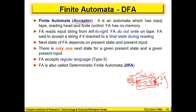It comprises an input tape where we are going to give input — for example, 010. We also have a reading head, through which we are going to read this input. And we have a finite control, which is the brain of that machine. The finite control is responsible for deciding, after reading an input, which state we are going to move to. FA has no memory.